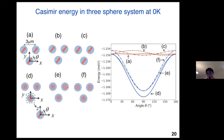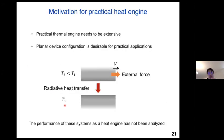We studied force and torque transfer among two and three spheres at rest, and our current work is to study the temporal dynamics of these systems. While these are fundamentally interesting, nanoscale objects will not be practically useful as a heat engine. Practical heat engines need to be extensive, and therefore a planar device configuration is desirable. For this purpose, we consider two parallel plates where external work is applied to one of the objects — the colder object — and we discuss that the radiative heat transfer between the two slabs flows from a cold object to a hot object, thereby achieving a heat pump.